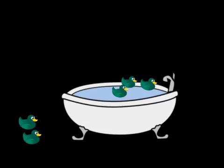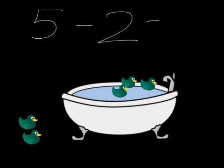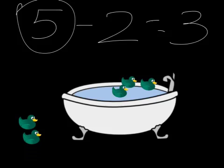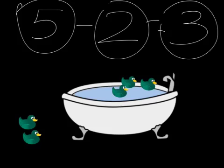One, two, three. So that would be, we started with five and two hopped out, so we're left with three. We start with the whole, we take a part away and then we find out what the other part is.